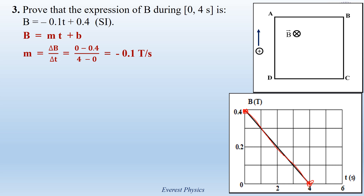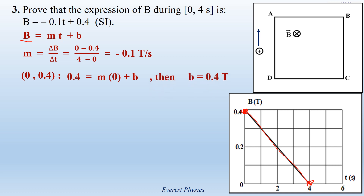To determine small b, we have to take one point from the curve. Let's take the point having an abscissa of 0 and an ordinate of 0.4 Tesla. Now, replace B by 0.4 and T by 0 in the expression of B. So 0.4 is equal to M times 0 plus small b. Then small b is equal to 0.4 Tesla. Therefore, B becomes minus 0.1T plus 0.4 in SI units.